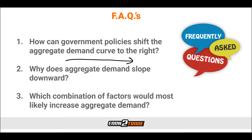Number two: why does aggregate demand slope downward? Many people might automatically assume that the aggregate demand curve should be a straight line, but this would assume that all determinants remain constant, which is not always the case. Even if the determinants were to move in the same direction, they wouldn't necessarily move at the same rate. There's also the added impact of imports and exports, and the lag between the increase in demand and the increase in production cost. When you look at it from a distance, the aggregate demand downward slope reflects the actual situation, as opposed to the theoretical situation.